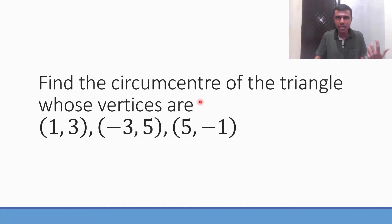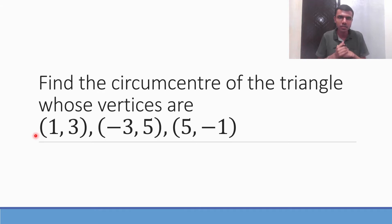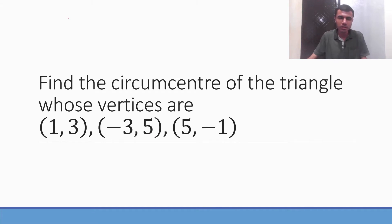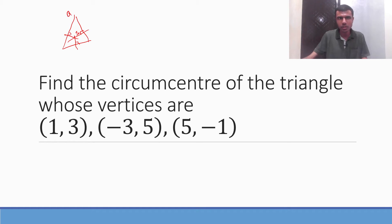Here we need to find the circumcenter — a very important question, worth 7 marks. Let me give you a brief explanation of what a circumcenter is. In a triangle, the point of intersection of perpendicular bisectors is called the circumcenter, which is denoted by S.